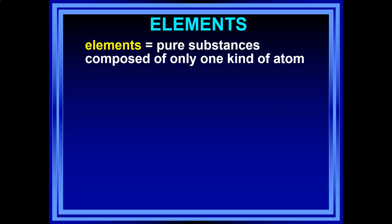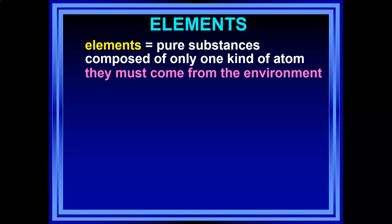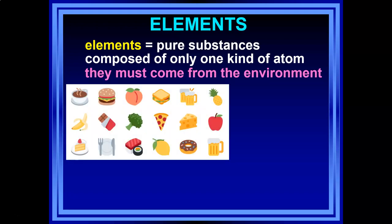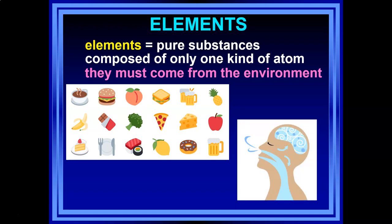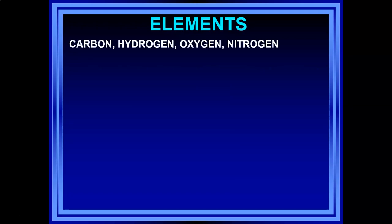Elements are substances composed of only one kind of atom, and they come from the environment — naturally occurring, found in our foods and the chemicals we process in our body. The four most common elements in the human body are carbon, hydrogen, oxygen, and nitrogen. Chemists love to abbreviate elements, and when they do, we get what's referred to as the atomic symbol — the shorthand or abbreviation for an element.